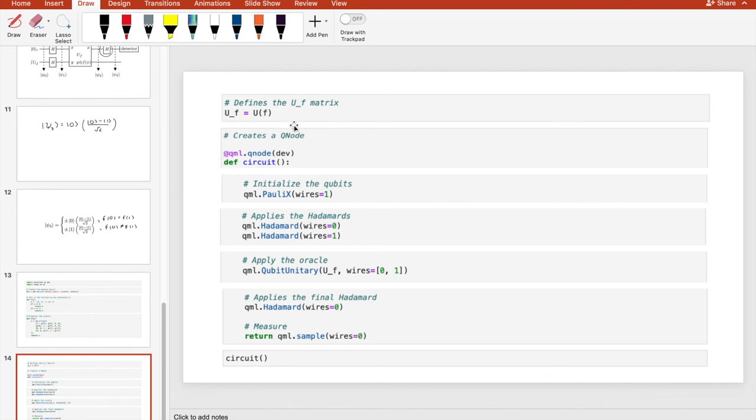Now we create our q node, which is essentially a quantum function and a device on which it executes in Penny Lane's framework. So we must now initialize the qubits in the state 0, 1 by applying a Pauli-X gate on the second one. Next comes the first hadamards. Then we apply the oracle and finally apply the second hadamard on the first qubit, measure that qubit, and call the circuit.